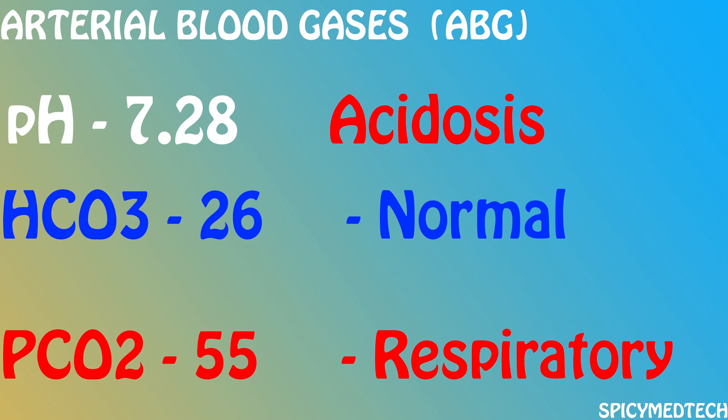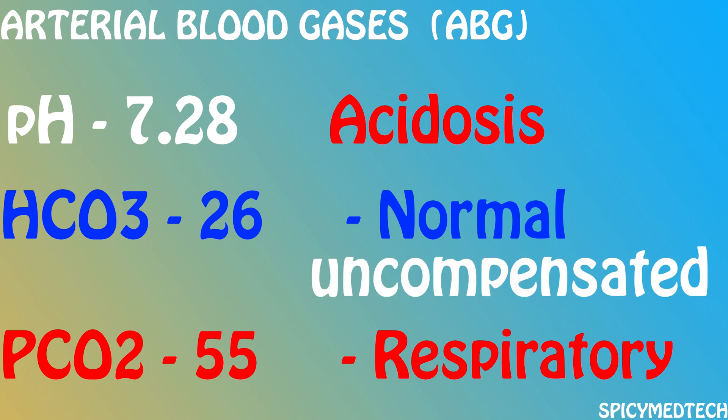Now let's see if it's compensated or uncompensated. Is the pH normal or abnormal? It's abnormal, so we can rule out fully compensated. Checking HCO3 — it's normal, therefore the kidney did not make an effort to compensate for the problem with the lungs. So we can call it an uncompensated respiratory acidosis, because the bicarbonate levels are still normal.